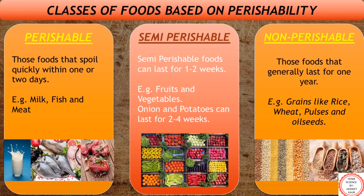Moving on to the classification of foods based on perishability — perishability refers to the shelf life of the food. We generally divide food into three categories: perishable, semi-perishable, and non-perishable. Perishable food items get spoiled within one or two days; examples include milk, fish, and meat. Semi-perishable food items last for one to two weeks; examples are fruits and vegetables, though onions and potatoes can last for two to four weeks. Non-perishable foods generally last for one year; examples include grains like rice, wheat, pulses, and oil seeds.